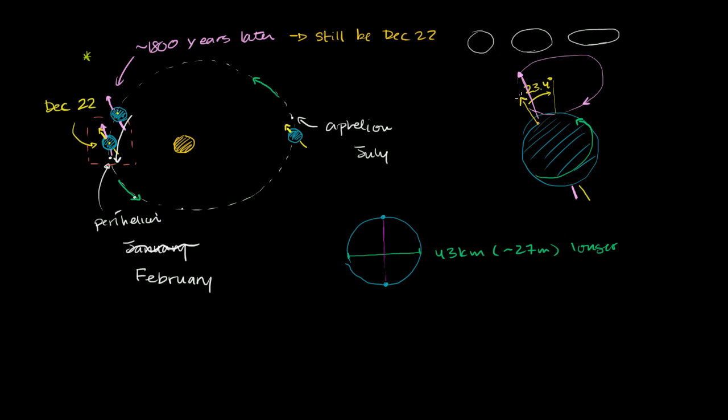We've learned that axial precession is not a change in the tilt or the obliquity of our rotational axis. It's a change in the direction. And over a long period of time, 26,000 years, it traces out a circle.